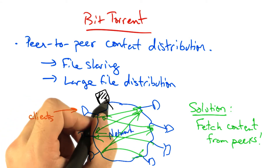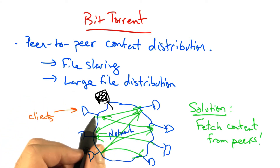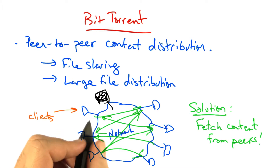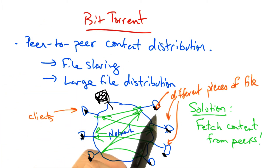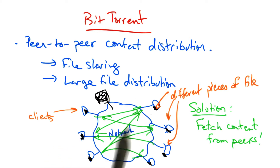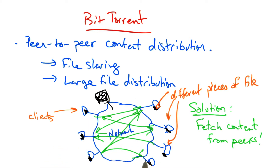We can take the original file and chop it into many different pieces, and replicate different pieces on different peers in the network as soon as possible.